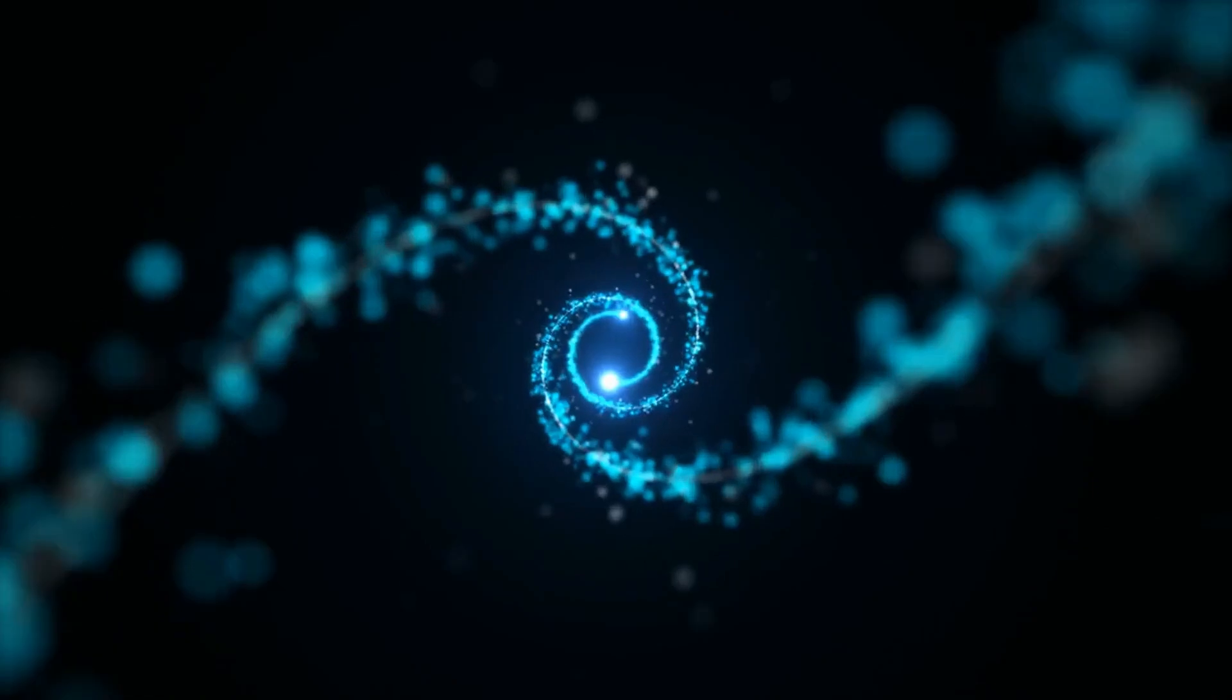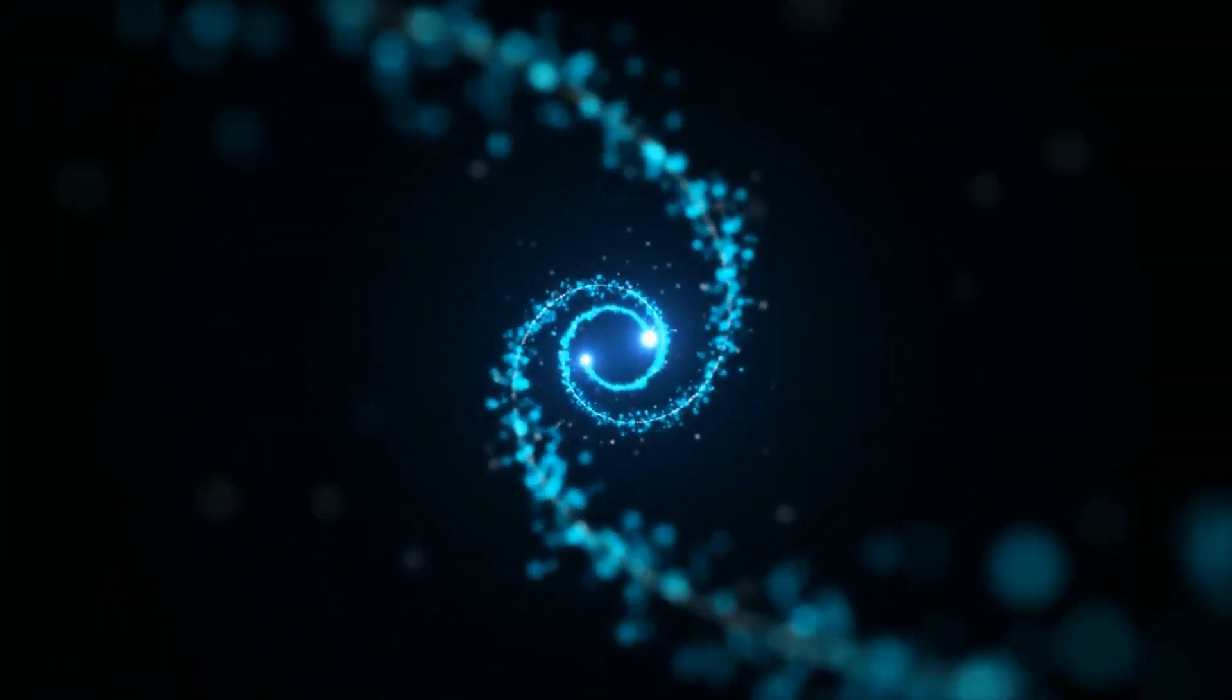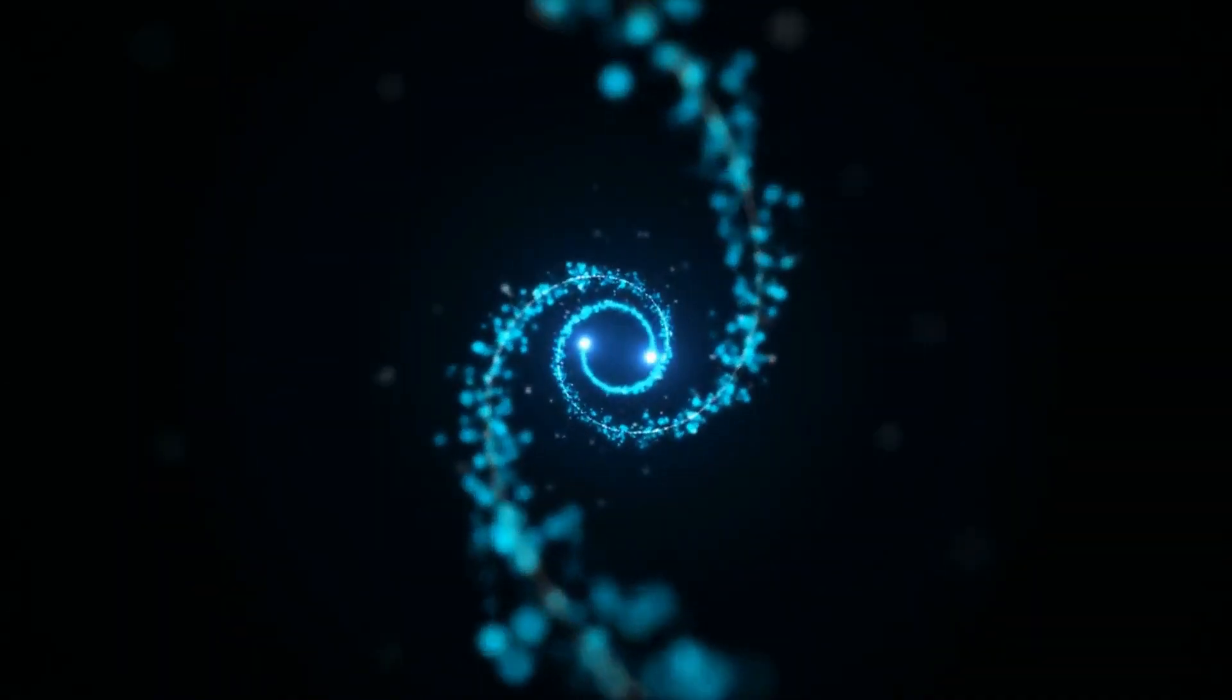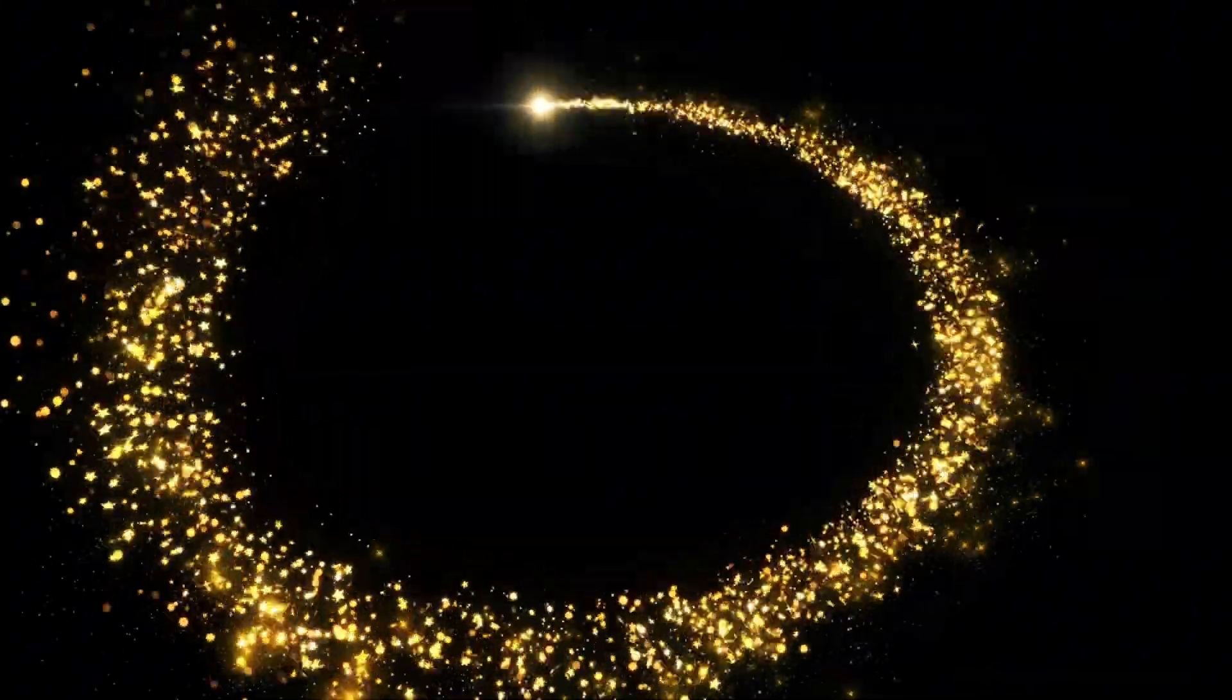But when you introduce a magnetic field, something interesting happens. Instead of moving in a straight line, the particles start to spiral. This spiraling motion is caused by the Lorentz force, where magnetic fields curve the path of moving charges. So now instead of just flowing, these particles begin to spiral along magnetic field lines. And here's where it gets powerful.